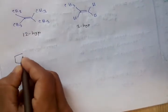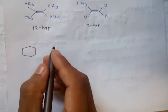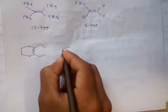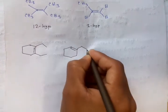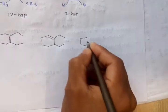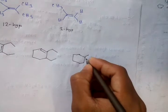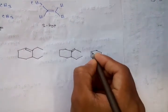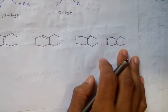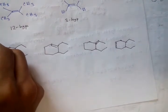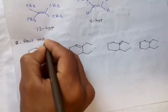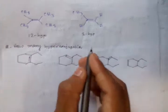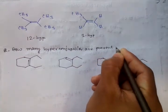Now another example: we have four systems, each containing a double bond, and the question is — how many hyperconjugations are present among each of these four systems?